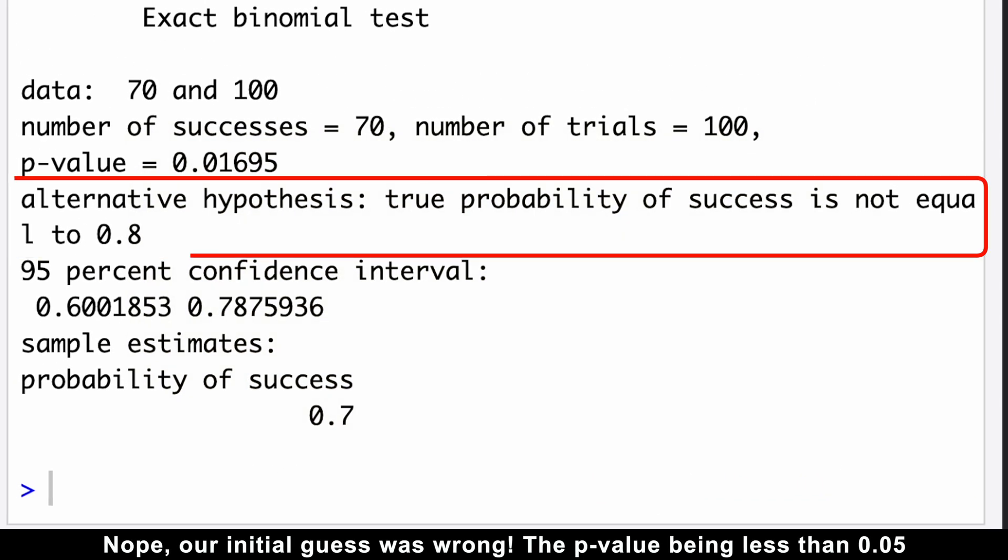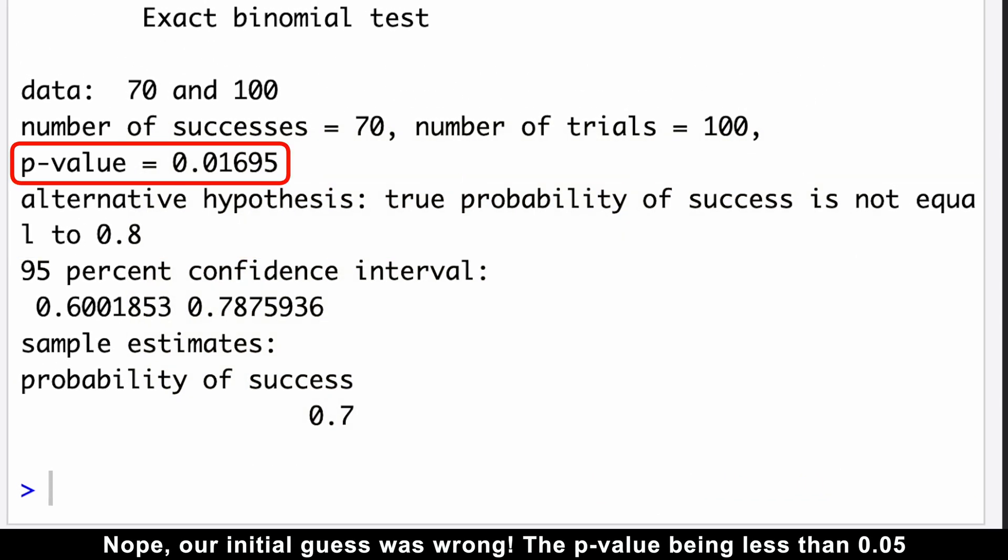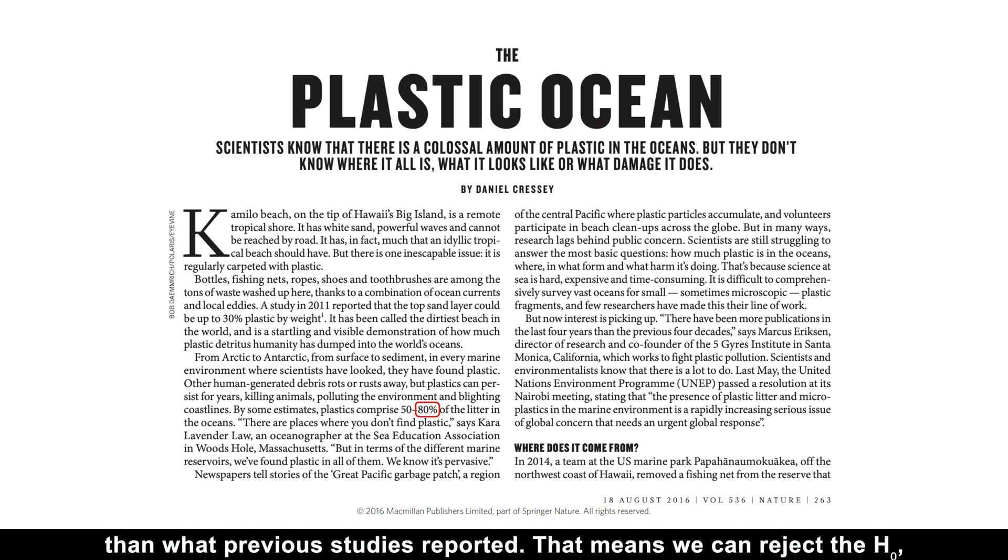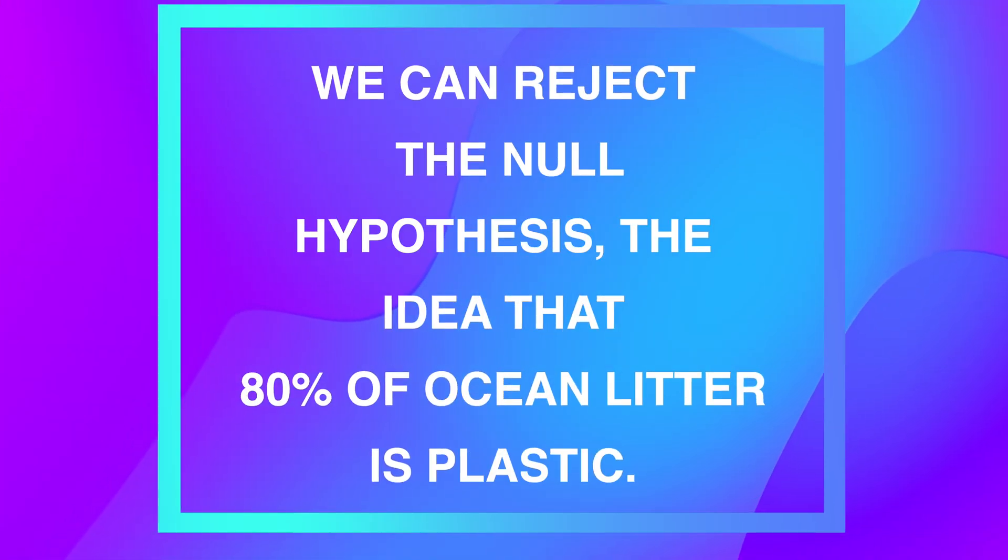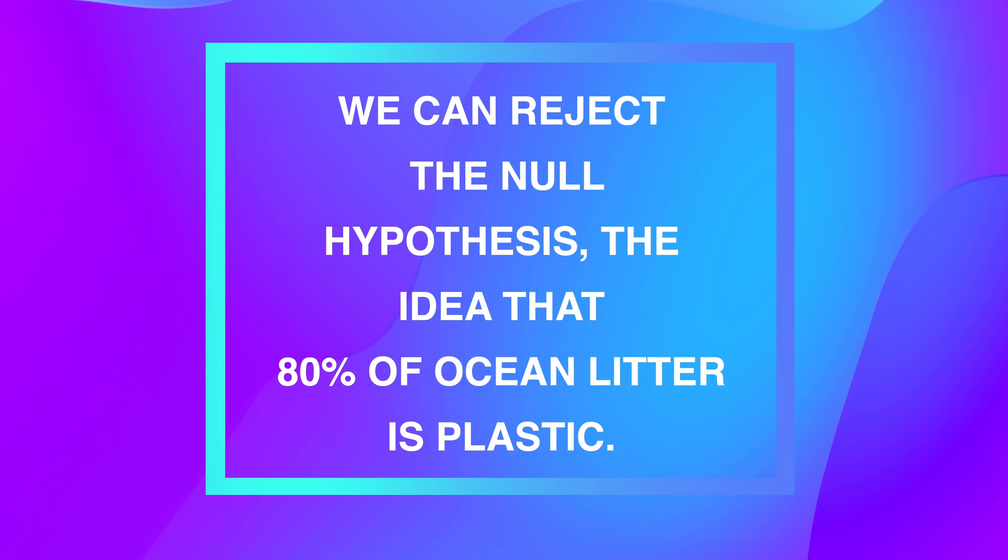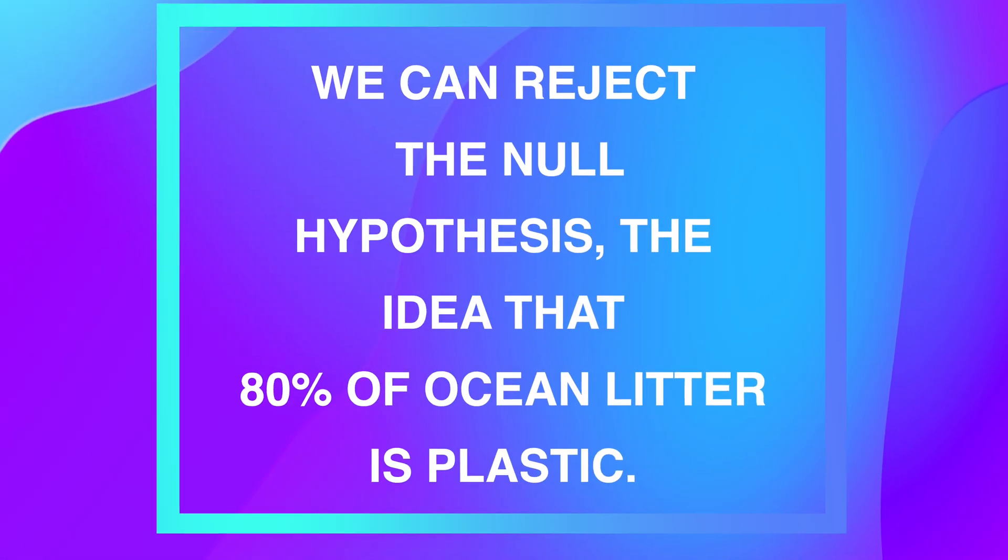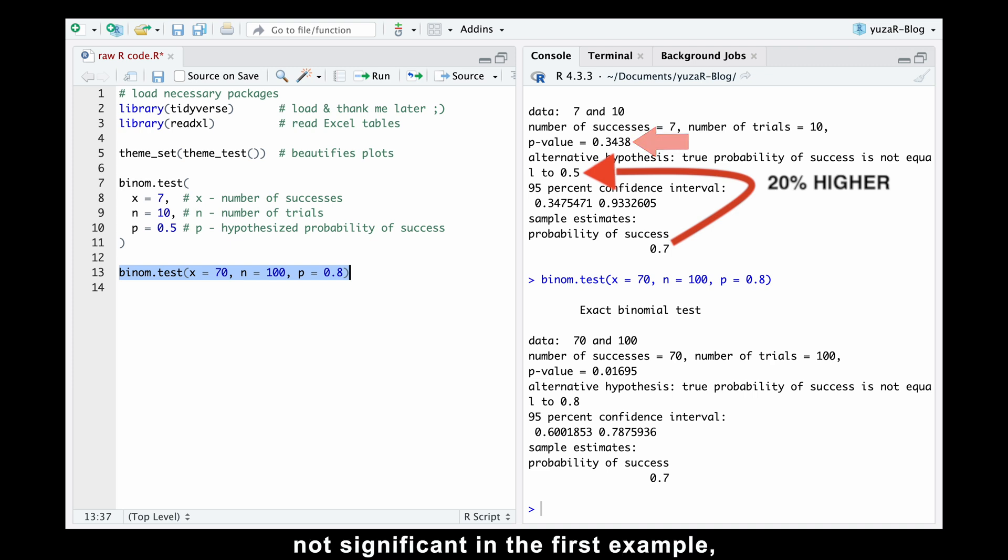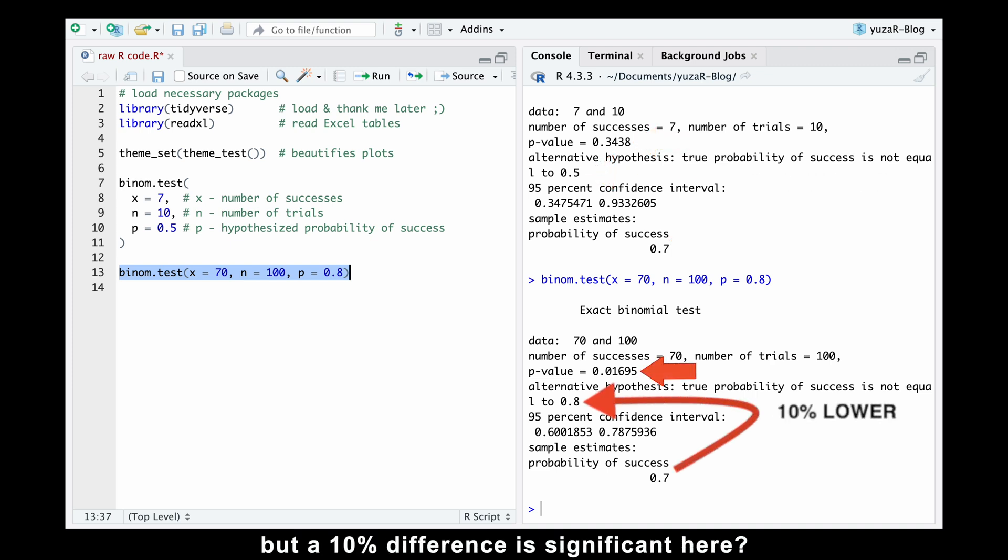Nope, our initial guess was wrong. The p-value, being less than 0.05, tells us that there is significant difference between the 70% of plastic we found and the 80% we expected. Basically, we discovered significantly less plastic than what previous studies reported. That means we can reject the null hypothesis, the idea that 80% of ocean litter is plastic. Now, you might be wondering why was a 20% difference not significant in the first example, but a 10% difference is significant here.